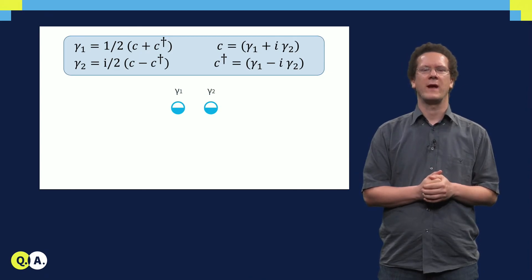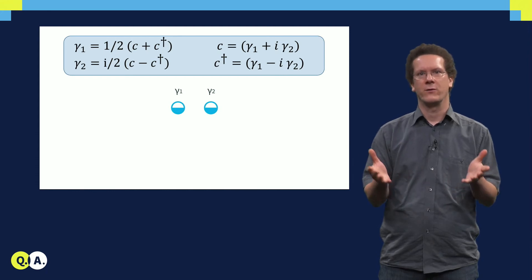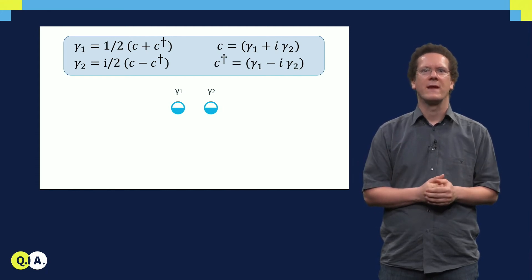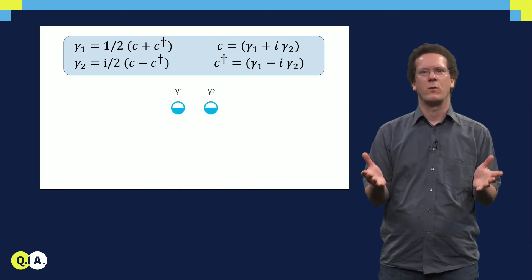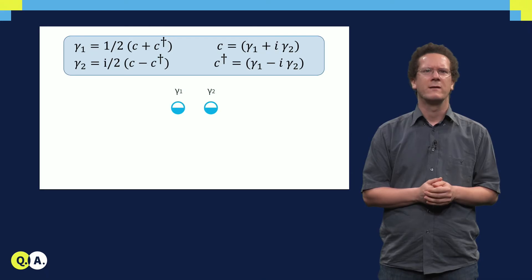Now I can do a simple linear superposition of operators, an equal superposition of creation and annihilation operators. It is very easy to see, I urge you to do the mathematics yourself, that those operators are Majorana operators. γ₁ equals γ₁†, and γ₂ equals γ₂†.